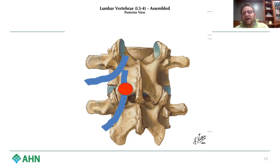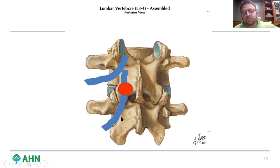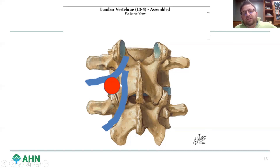Think of it as cars working their way from the innermost lane all the way to the right to exit the highway. This is why a paracentral disc herniation typically compresses the traversing nerve root. At L3-4, a paracentral herniation compresses the L4 nerve root, while the L3 nerve root exits above. Conversely, a far lateral disc herniation gives the opposite — it compresses the exiting nerve root.